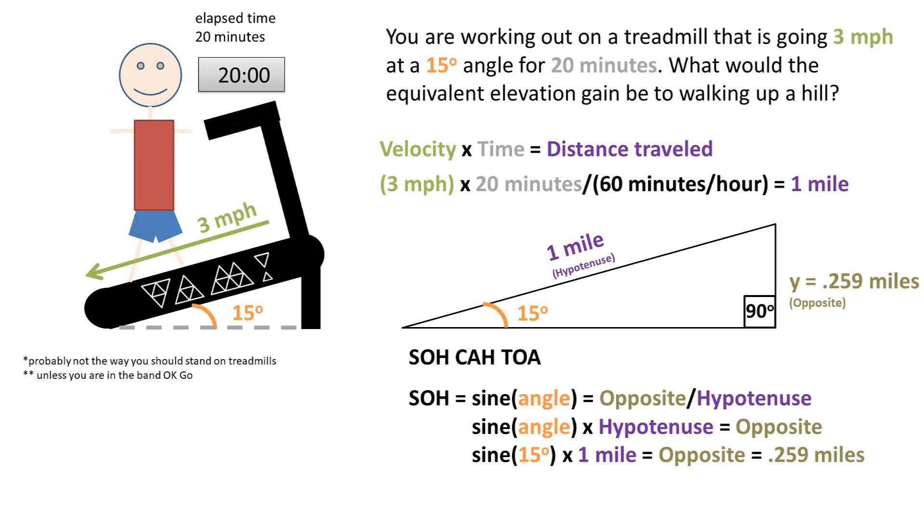Plugging in all of our numbers into the calculator, we get an equivalent elevation dating of 0.259 miles, or about a quarter mile up.